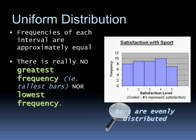The next is uniform distribution. This is a consistent level of frequency where, at each interval, there are approximately equal respondents — no great frequency, nor a low frequency. So if we ask a question and get a uniform frequency, it would mean that the satisfaction level is even right across the board. There's no great satisfaction and no low satisfaction with the sport — every single satisfaction level is evenly distributed.